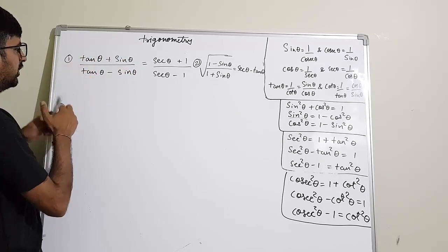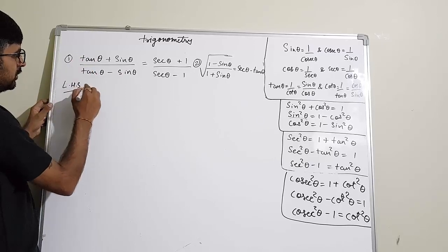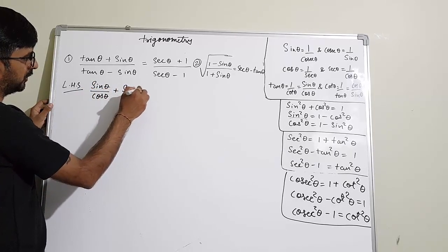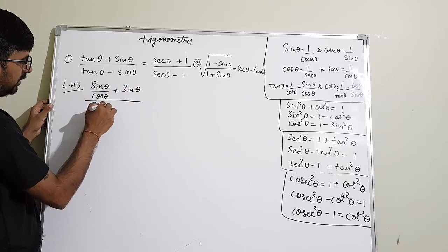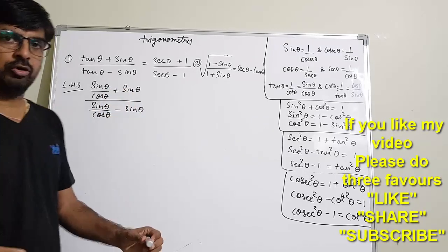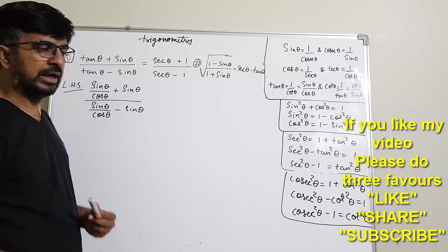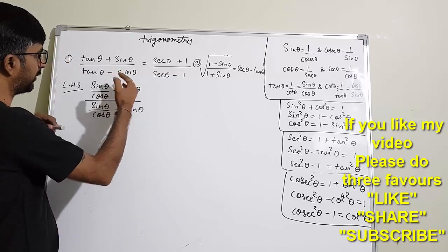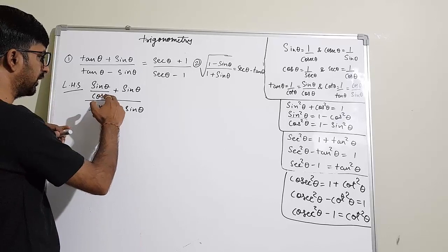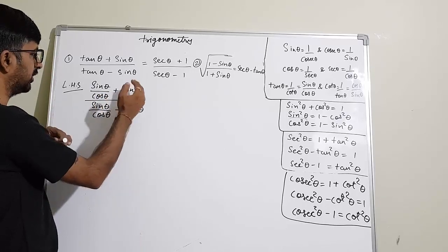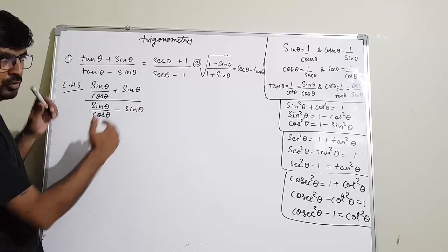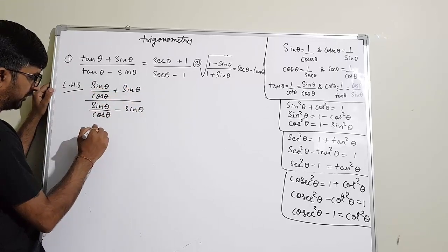Already this is in sin, but here also we are going to convert. So tan θ is sin θ by cos θ plus sin θ upon sin θ by cos θ minus sin θ. Now generally what students do is find out LCM. But here I will tell you a shortcut trick: when this type of question comes, directly you can take out sin θ as common. So this answer will come in three to four steps.